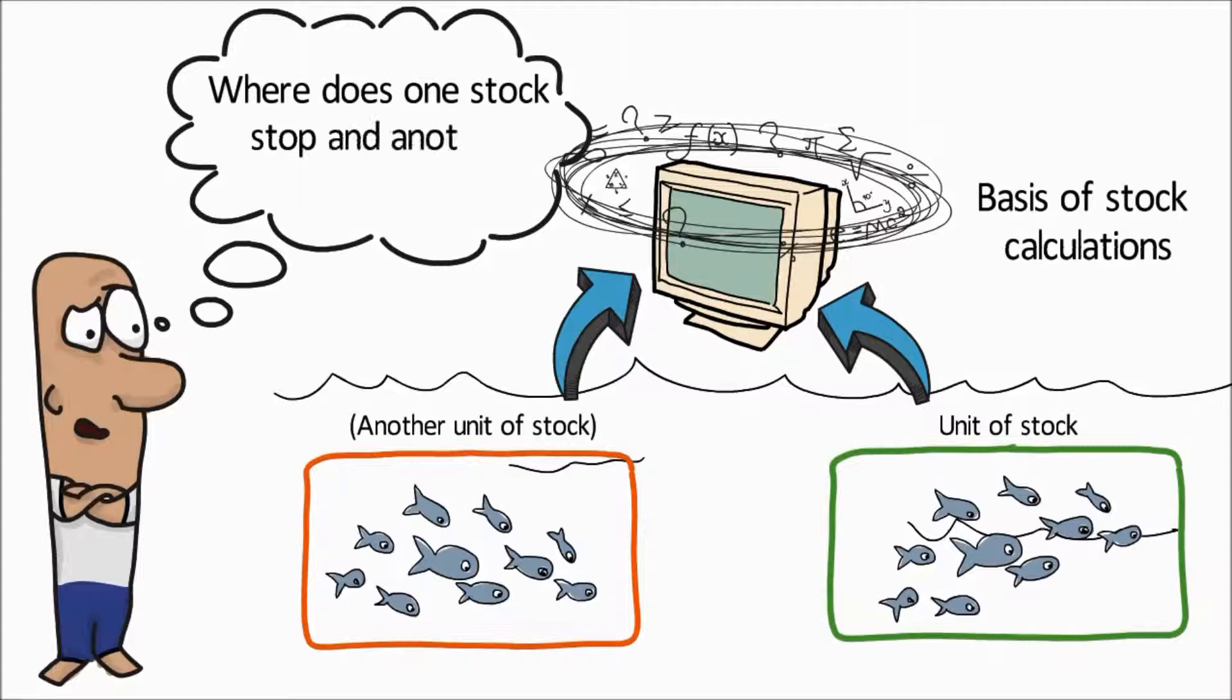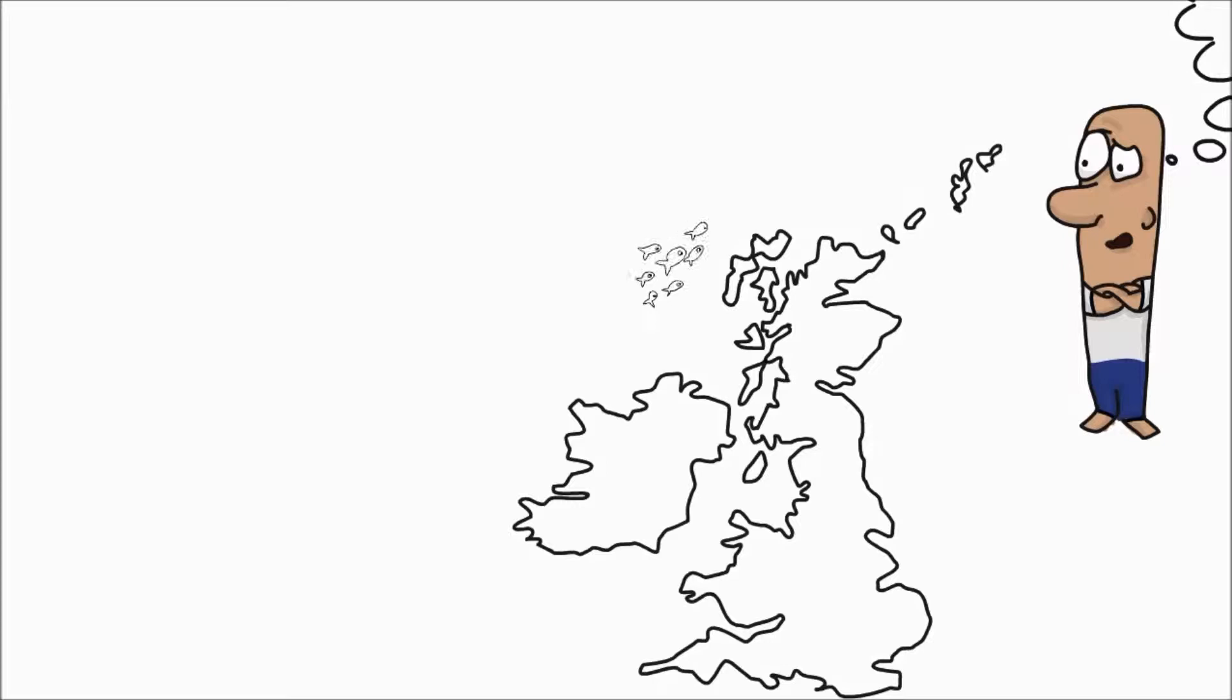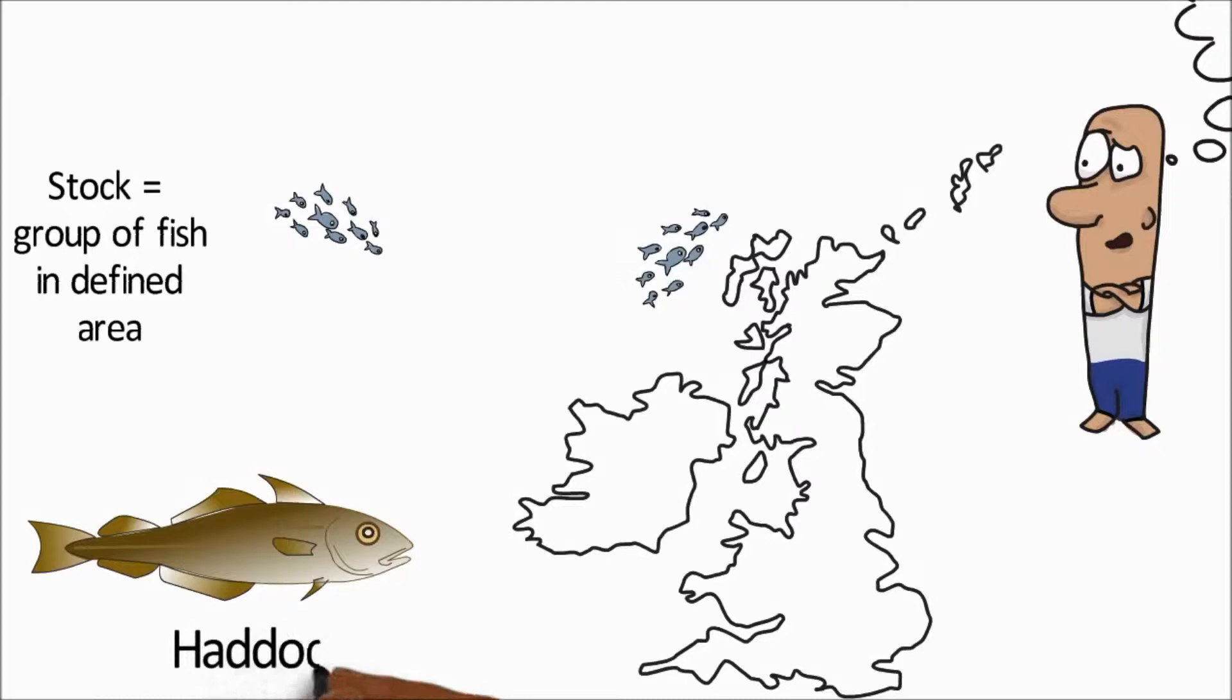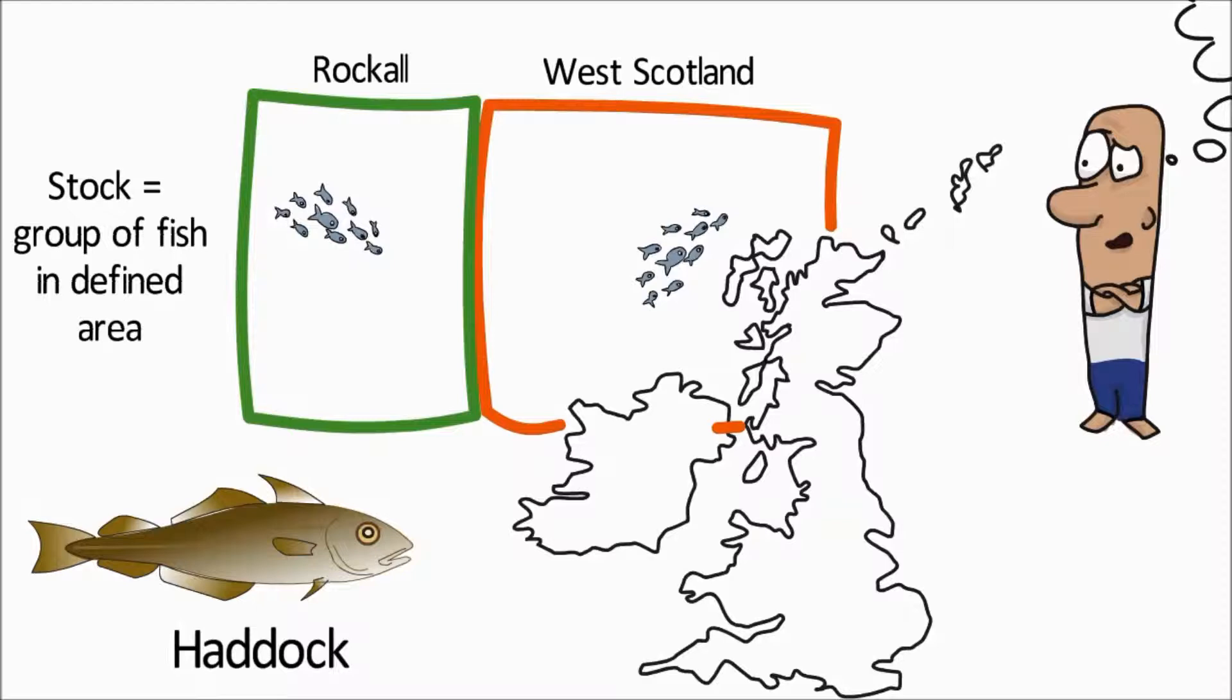So where does one stock stop and another begin? To do a stock assessment, scientists first need to know where the fish live, and then a unit of stock is treated as being a geographically discrete group of fish that are found in a defined area. For example, haddock on the west coast of Scotland are defined to be a different stock to haddock in the Rockall area.